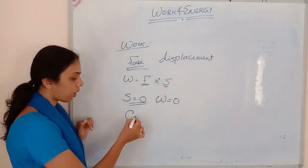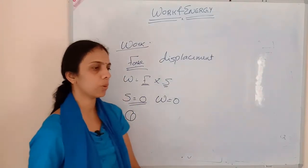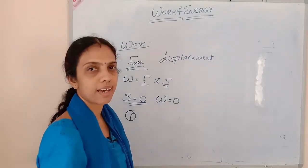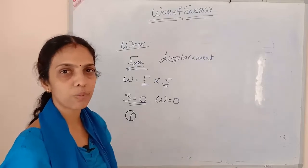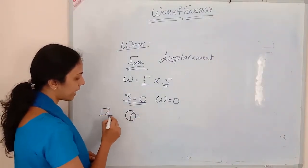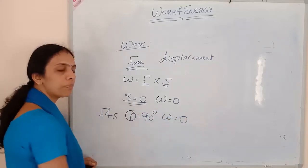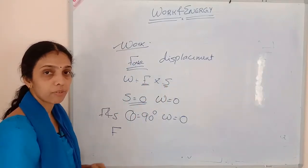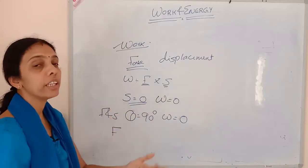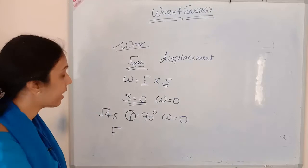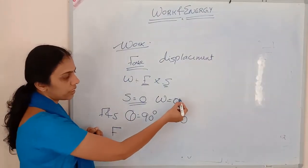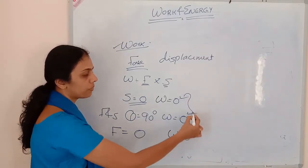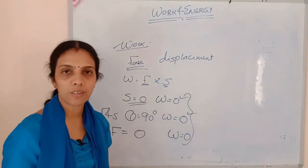Now say he is standing for a long time and then starts walking. The force MG is acting downward and displacement is happening horizontally, so the angle between force F and displacement S is 90 degrees. If the angle between F and S is 90 degrees, then work done is also equal to zero. Also, if displacement is happening in the opposite direction to force, work done will be negative. And if no force is applied at all, work done will be zero. These are the conditions for work done to equal zero.